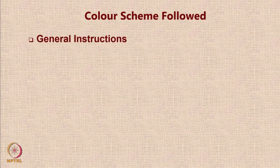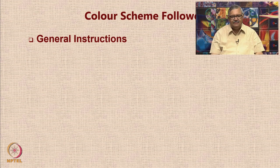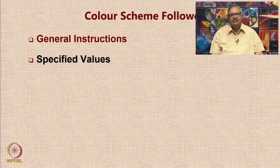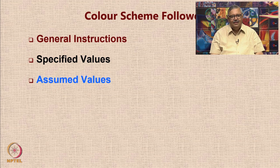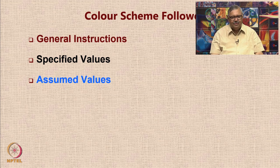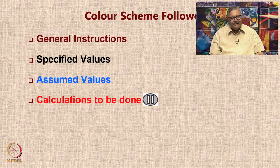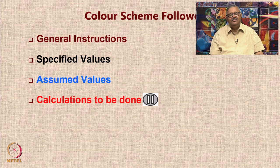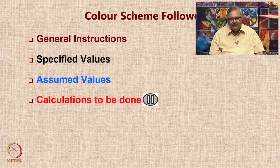In this case study, we are going to follow a particular color scheme for your convenience. All instructions regarding the hot air balloon will be given in brown color. All specified values given by the user will be shown in black. All values assumed for calculations will be shown in light blue. Wherever there are calculations to be done, you will see a red colored symbol or a pause symbol.